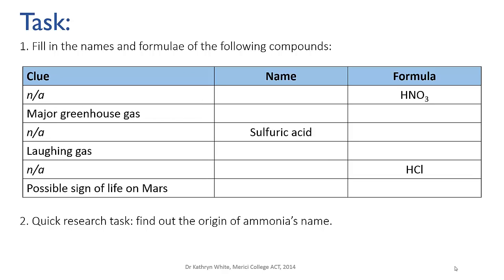Here's a quick task to test your memorization: fill in the blanks in the table where there are names and formulae missing. And if you've got the inclination, as a quick research task, find out the origin of ammonia's name — you can do this by Googling. It doesn't follow the normal naming conventions; it's an old historical name and it's got quite an interesting etymology.